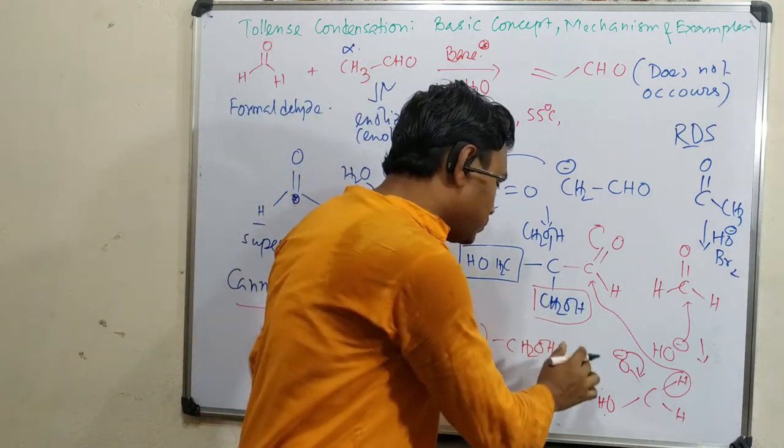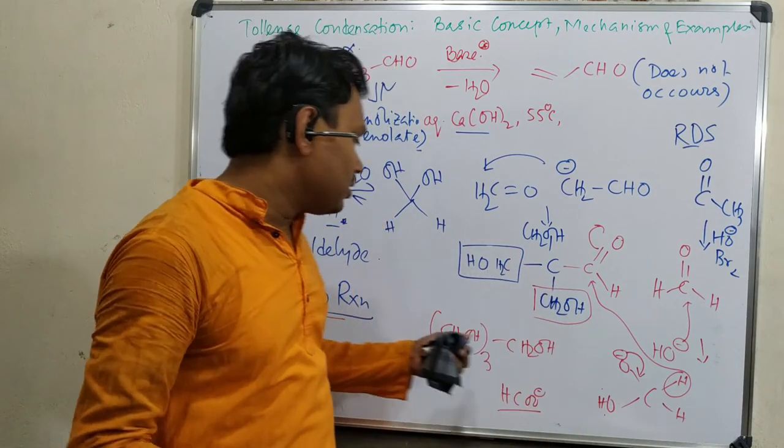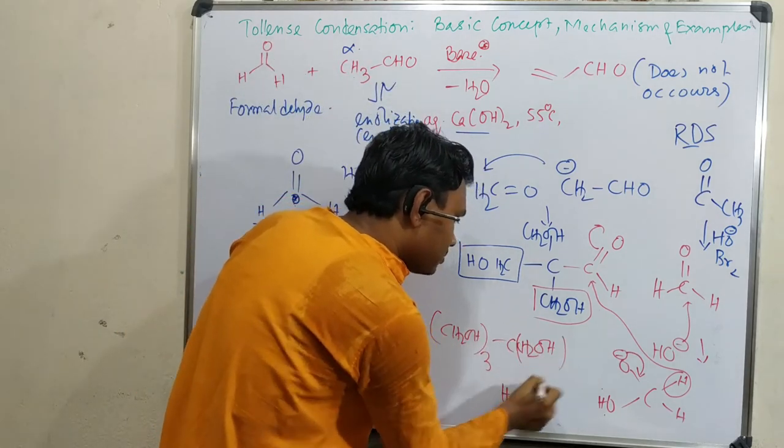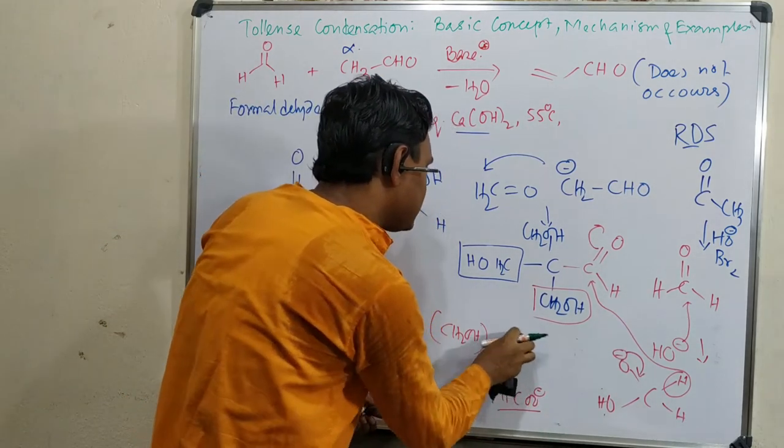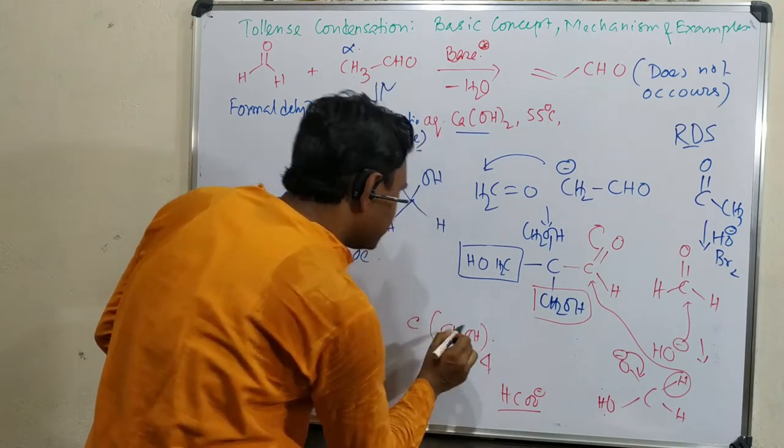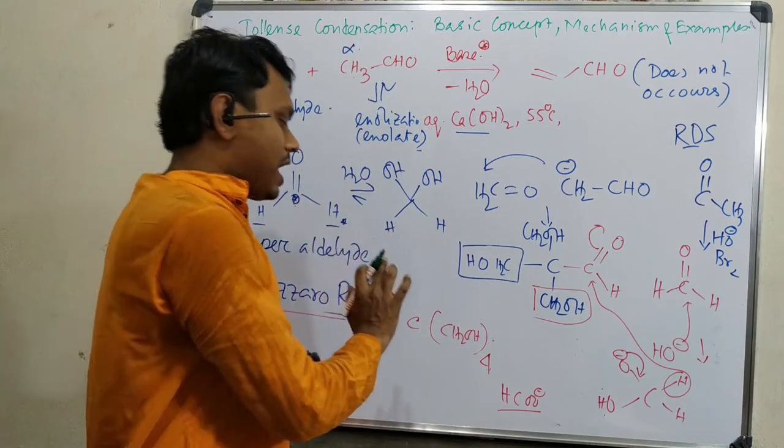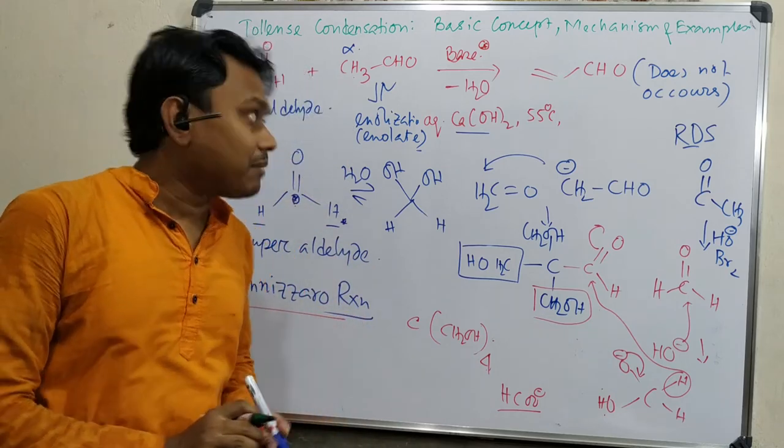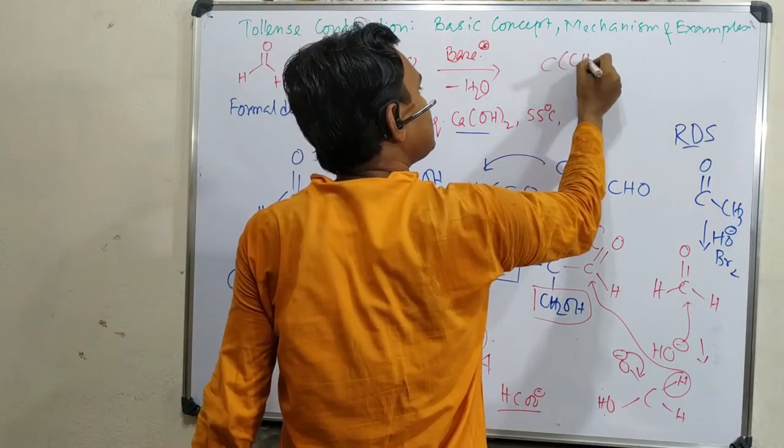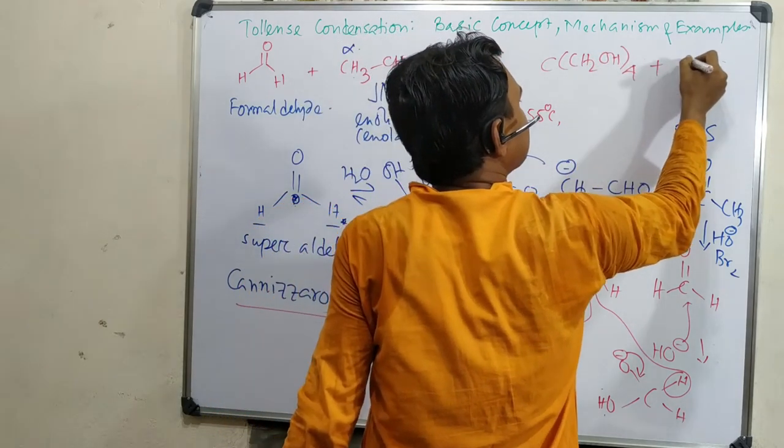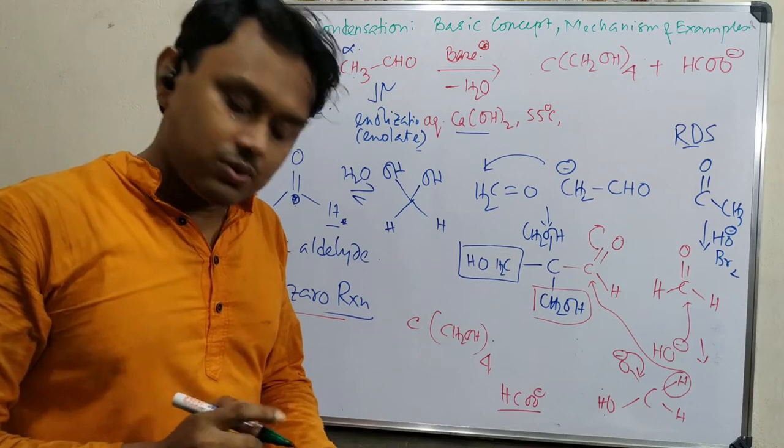So in this way, this acetaldehyde could be converted into pentaerythritol. If we write in an easier way, that is CH2OH, four CH2OH groups attached to one carbon. So this is a unique strategy and this is called the Tollens condensation reaction. So we have understood the basic concept and mechanism. Ultimately if we do the reaction, instead of the expected aldol product, what occurs is this pentaerythritol plus formate. So I guess you have understood the basic point.